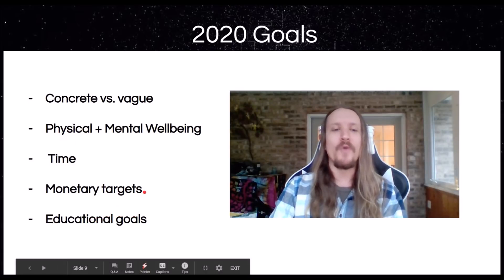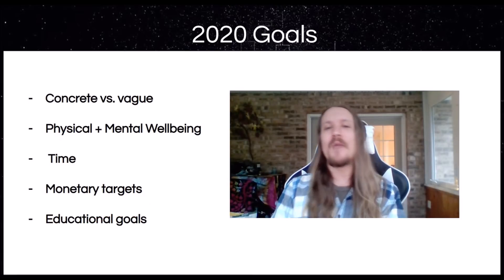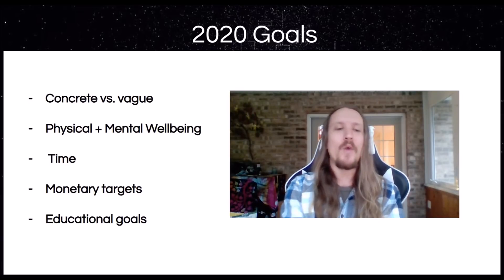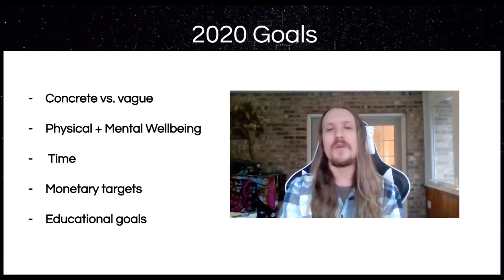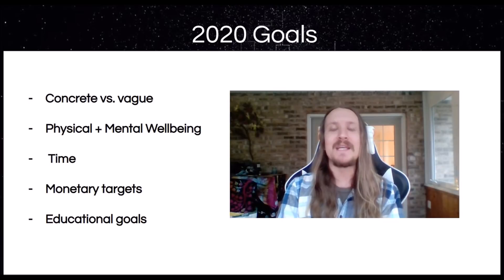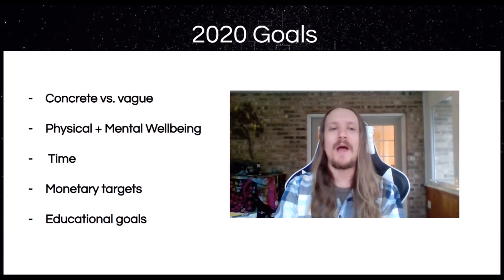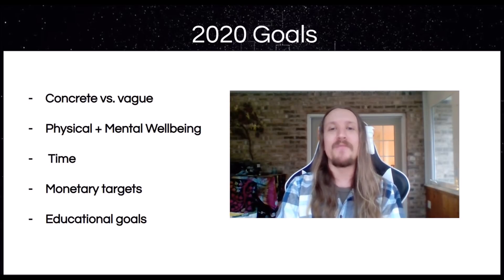Monetary targets — very straightforward. Educational goals: I want to put in two hours a week watching YouTube videos. I want to read Trading in the Zone by the end of April. Write these down — the more these goals can be manifested in reality rather than just fluttering thoughts in your head, the more likely you are to stick to them. Write down all your goals: monetary, educational, health, and wellbeing. Make them concrete and have something to strive for in 2020.